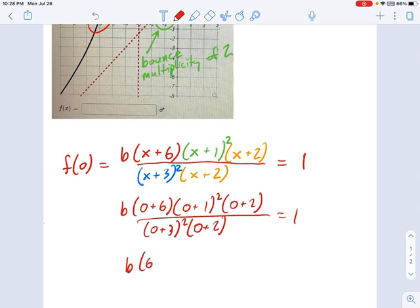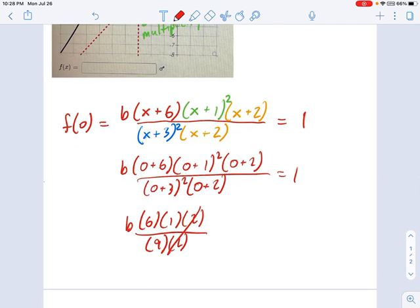Simplify that a bit. b times 6 times 1 times 2 over 9 times 2. So the 2s cancel out and we get, I'm going to simplify this fraction a little bit. You don't need to, but I'm going to call this 2b over 3 equals 1. So we rearrange that a little bit and we get b equals 3 over 2, right? I multiply both sides by 3, divide them by 2.